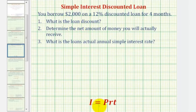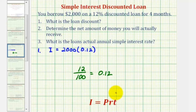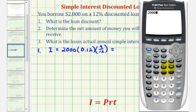For number one, remember the discount is the interest paid up front, so we'll use the simple interest formula. I, or the discount, equals P, the loan amount of two thousand dollars, times R, the annual interest rate of twelve percent, which as a decimal is 0.12, times T, the time in years. The time is four months, which is four-twelfths of a year, or one third. So we have 2000 × 0.12 × (4/12), and the loan discount is eighty dollars.